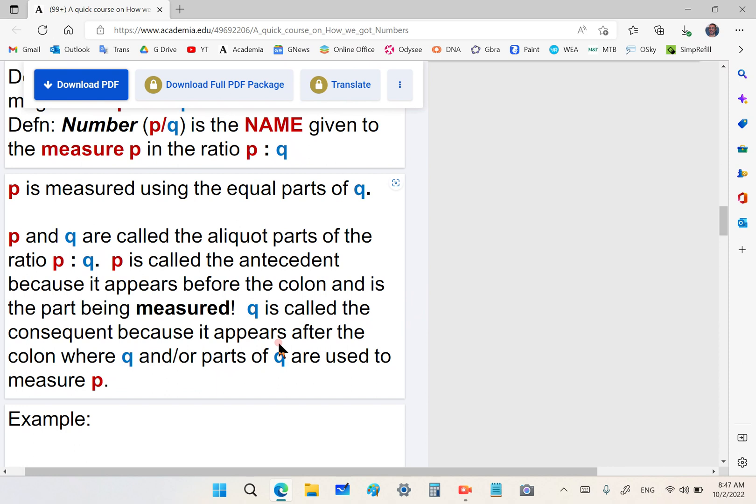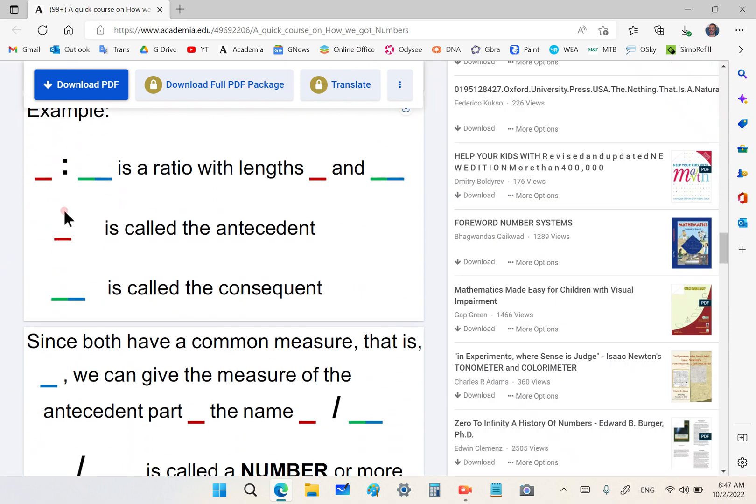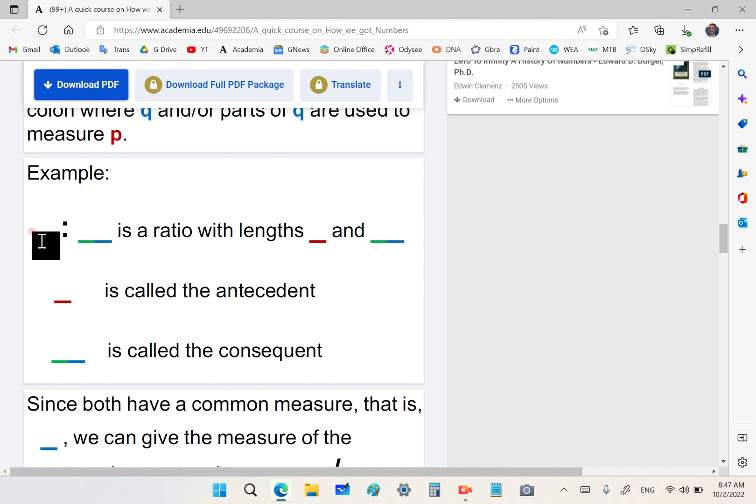By convention, p is the one that is measured by the consequent. If q can measure p by either equal parts of q and or q itself, then we say that there is a number that describes the ratio p colon q, and that number is called p over q.